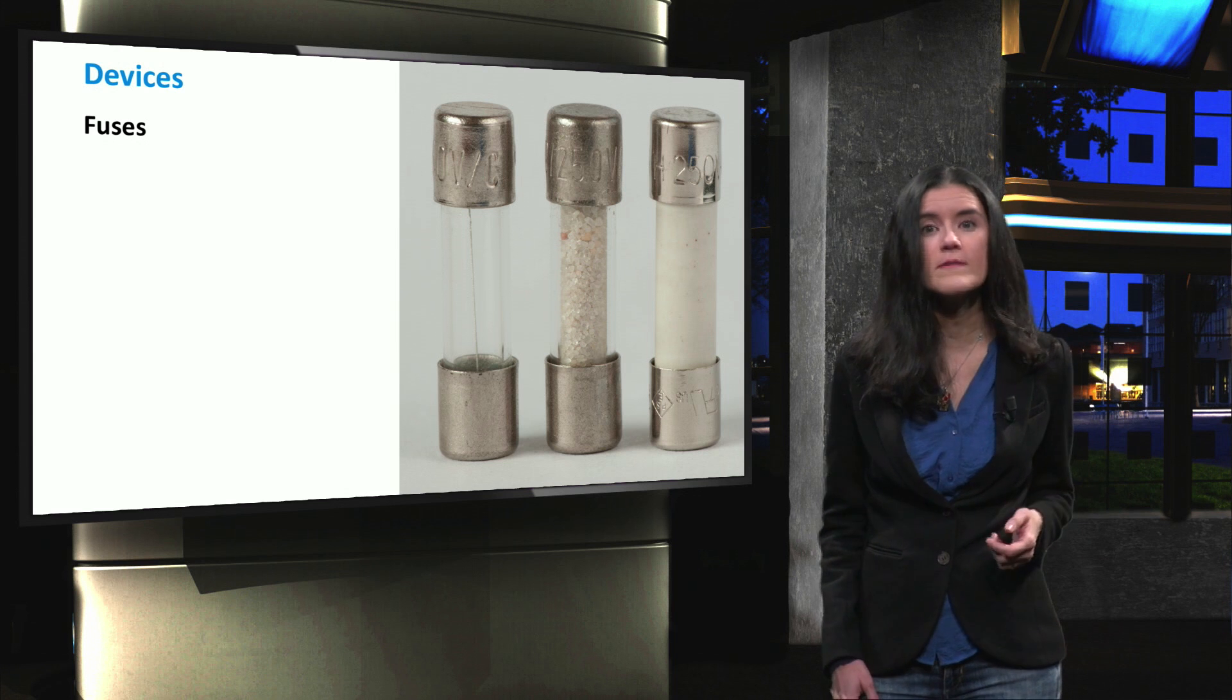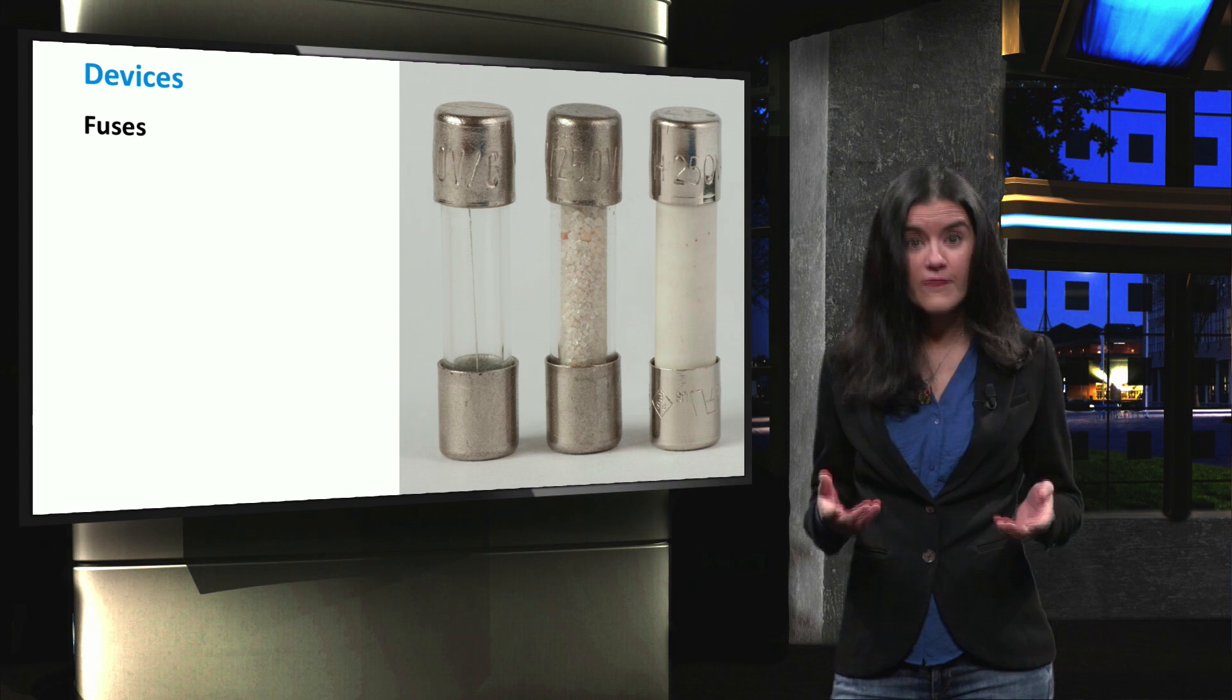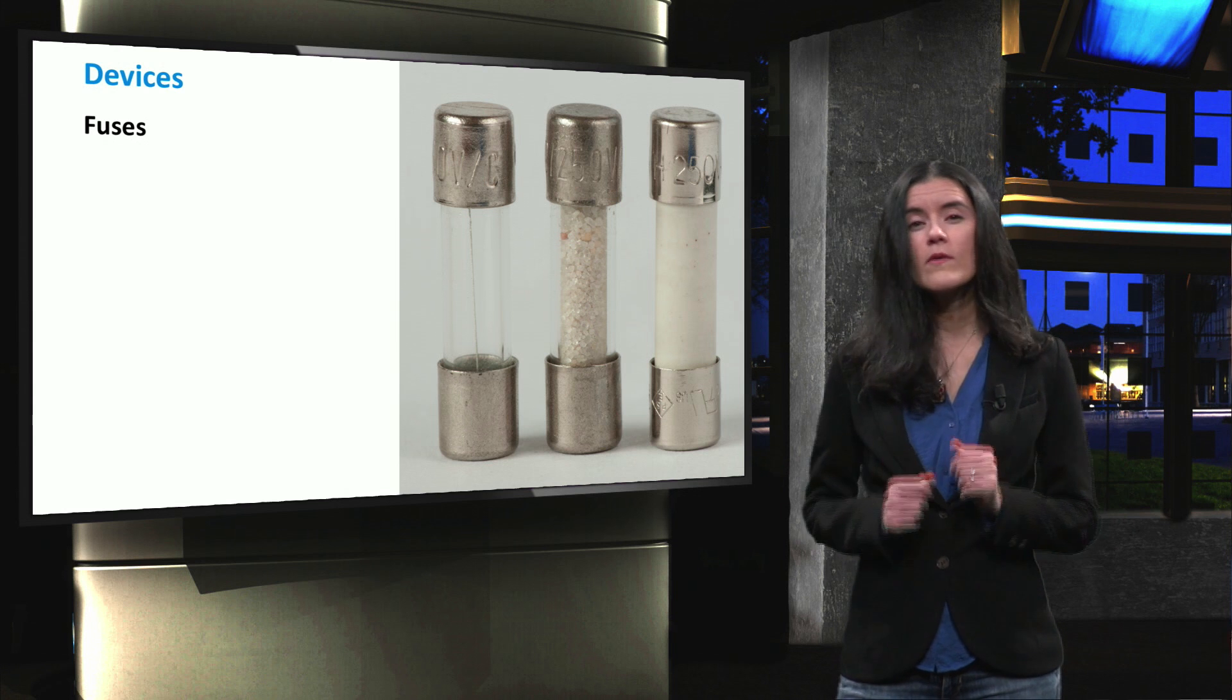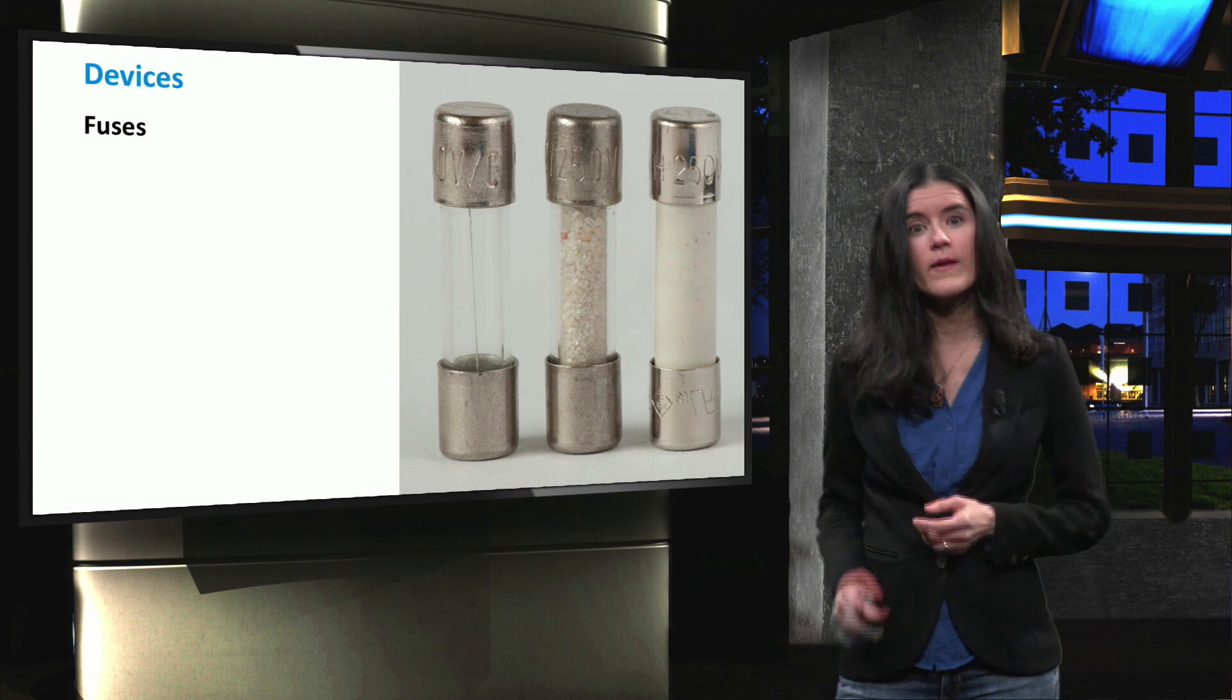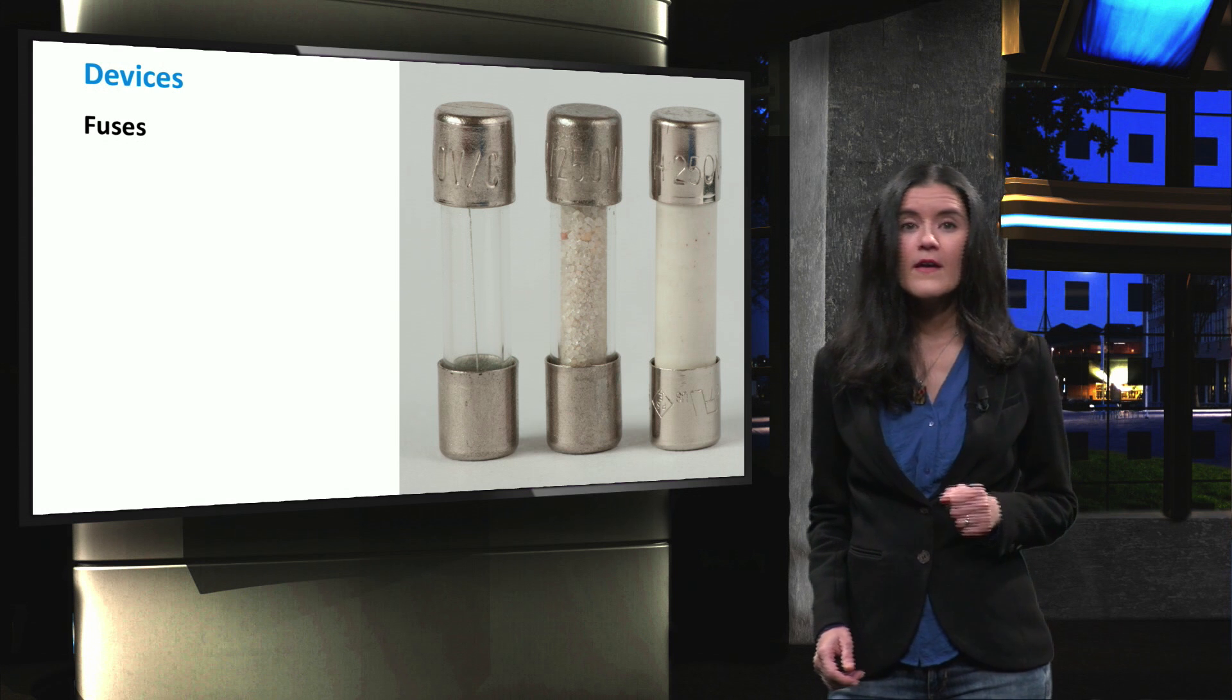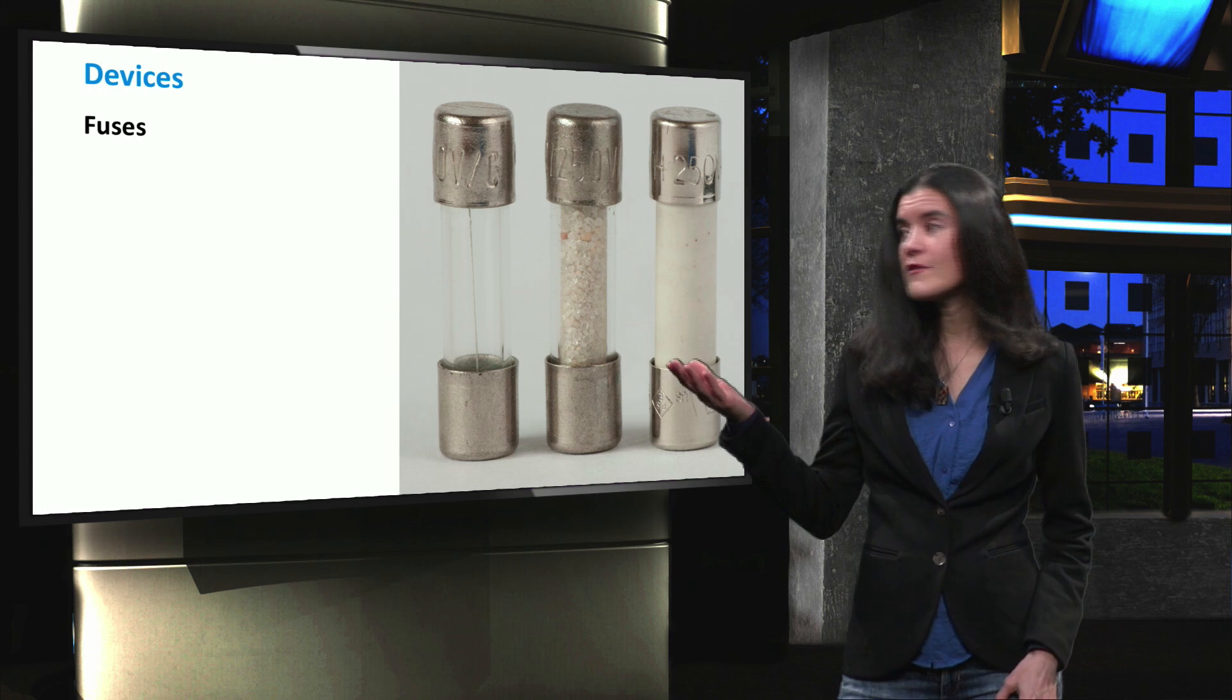A fuse interrupts the current flow if there is a short circuit. The filament inside the fuse melts when there is an overcurrent, and this is a way for the circuit to be isolated. In the picture, you can see different types of fuses.